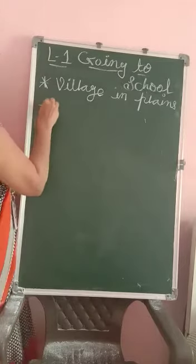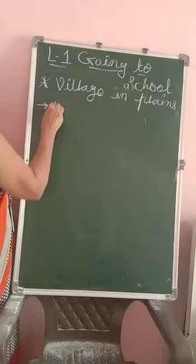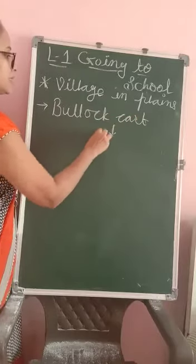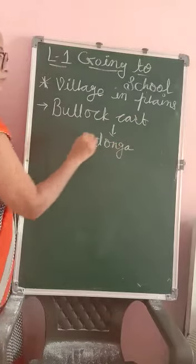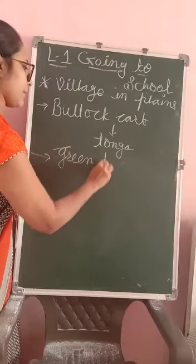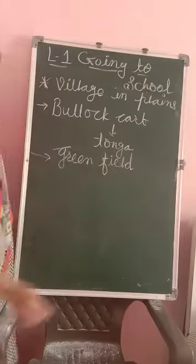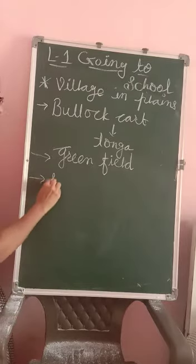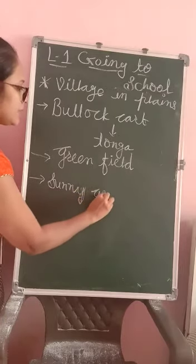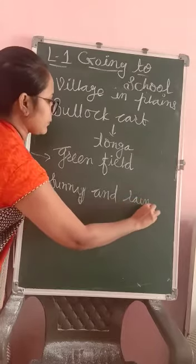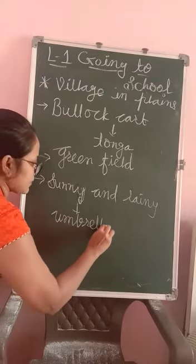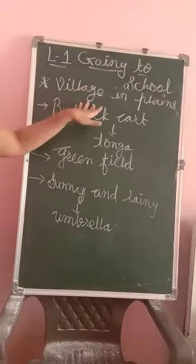In Village area, children use gulab card. Gulab card means stand up. In Plains area, there is a green field everywhere. The weather is sunny and rainy. So children use umbrella. In Village area, children use gulab card to reach their school.